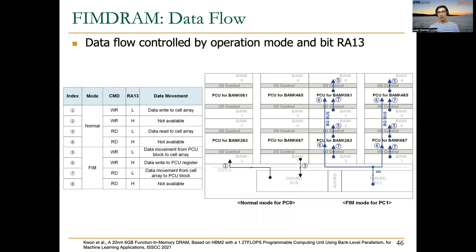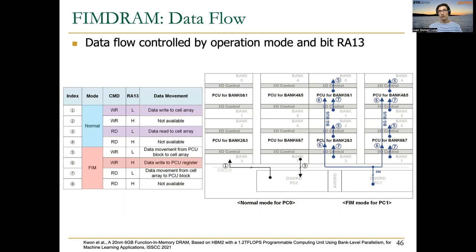Regarding the data flow — how data is accessed by the host or the PCUs — this is controlled by the operation mode, which can be either normal mode or PIM/FIM mode. There is also the RA13 bit, the 13th row address bit, which needs to be set high for PCU registers. This is necessary for data writes to the PCU registers, such as writing instructions or constants to the SRF. The remaining cases cover either normal operation with the host writing or reading to the cell array, or data movement between the PCU and the cell array in either direction.